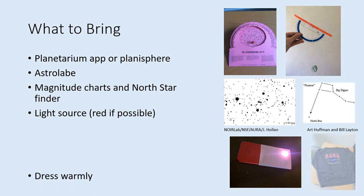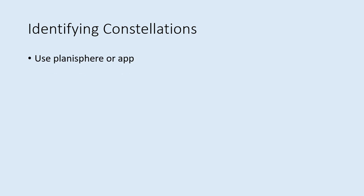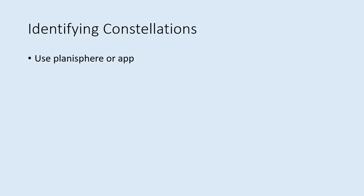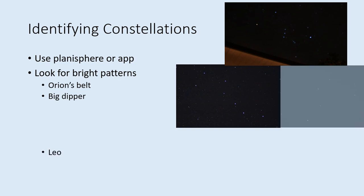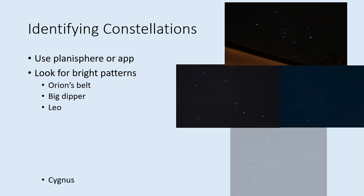Also, make sure you dress warmly enough for the weather — you're going to be standing in one place for a while, so it's easy to get chilled. Once you're at your observing site, start by identifying a few bright constellations. Your planisphere or planetarium app will be important here. As you scan around the sky, look for simple patterns of bright stars. The lab write-up mentions a few of these, including the belt of Orion, the Big Dipper (part of Ursa Major), the head of Leo, and Cygnus. Only some of these will be up at any one time, so use your map to help you decide which are worth looking for and which direction to look in.